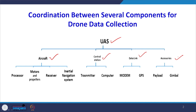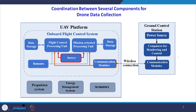The aircraft, ground control station, and data link communication systems all require coordination. There is a UAV platform in one box and the ground control station in another. Onboard flight controller systems include data storage, flight controller processing, mission-oriented processing, and battery support, along with sensor systems. The ground control station has a power source, communication modules, and processing and software systems. There is two-way coordination between the two via wireless connectivity.